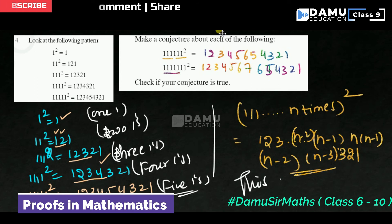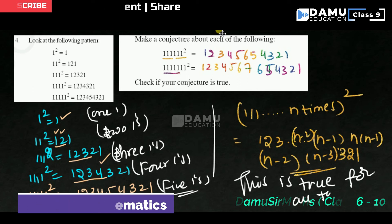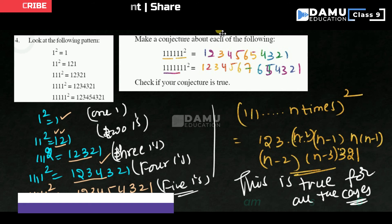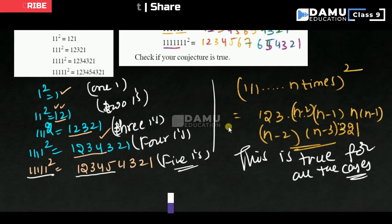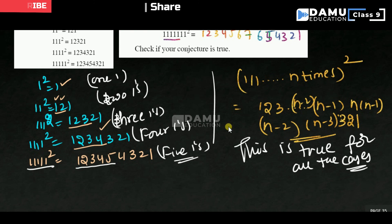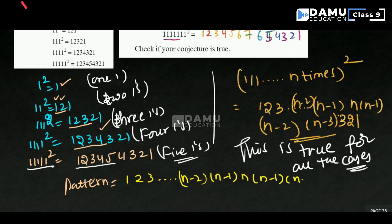This is the pattern and this conjecture is true for every case. This is true for all the cases. It is repeating like that. So pattern. Again you can write one more pattern. The pattern will be like this: 1, 2, 3 dot dot dot n-2, n-1, n. Again n-1, n-2 dot dot dot 3, 2, 1. So this is the pattern, as above pattern only.